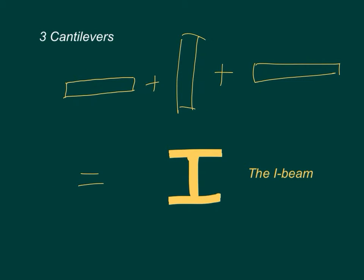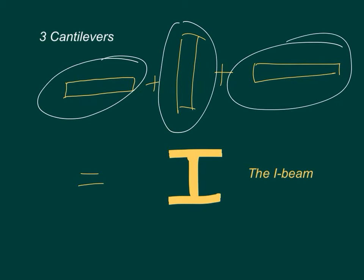So we could make a structure that's very stiff. And this is kind of the conceptual idea behind that. If you take 3 cantilevers, in this case, oriented in 3 directions, 2 of which are the same, and combine them, you equal an I-beam.